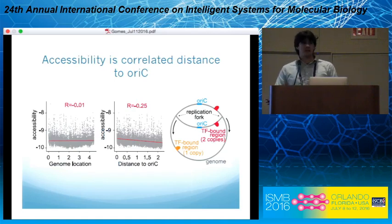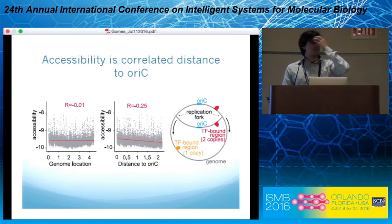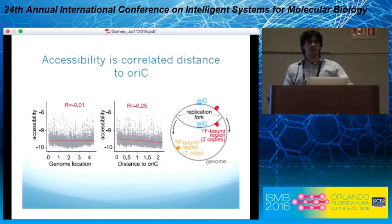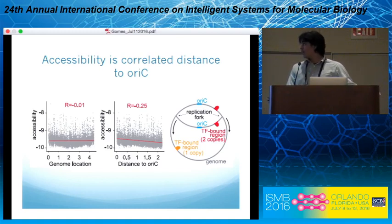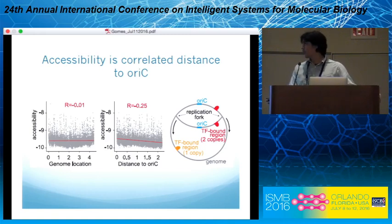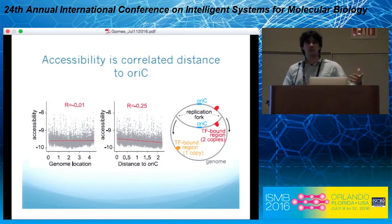Moving forward, we can also see something new using this dataset: the accessibility in bacterial genomes. It's a little bit different from eukaryotes and more elusive to measure because the bacterial genome is very compact — 90 percent of the genome is coding region and only about 10 percent regulatory regions, and they don't have chromatin structure. This method actually helps you see accessibility in a quantitative way, and when you have a quantitative metric, we can ask questions and hypotheses about what causes accessibility.